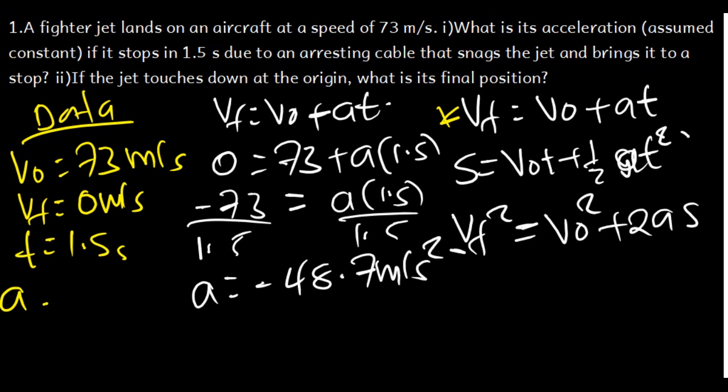The reason the answer is negative is because the jet was coming to rest — it was decelerating. Now, Part Two says: if the jet touches down at the origin, what is its final position?